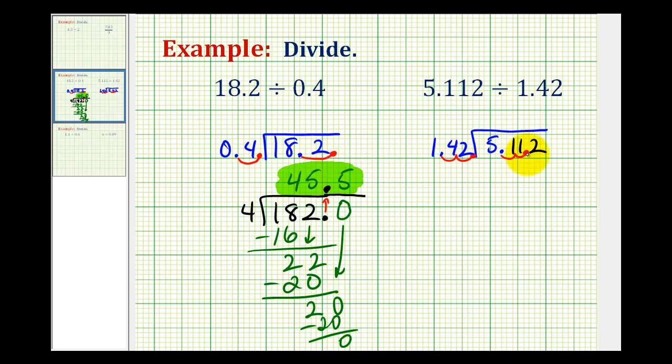And just so it's easy to read, let's go ahead and rewrite this. We're going to have 511.2 divided by 142. And this quotient will be the same as the quotient to the given problem. And now we'll move the decimal point up into our quotient and divide as we normally would.